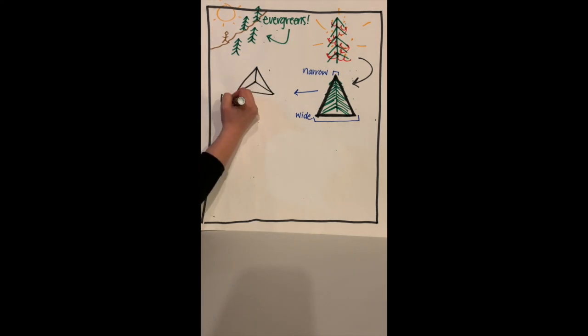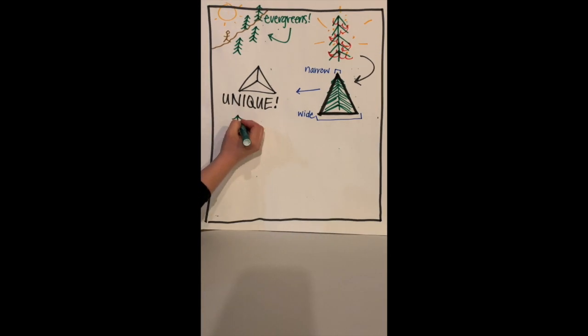Experts believe the unique pyramid shape of certain evergreen trees is an adaptation that has evolved over thousands and thousands of years. Many of these evergreens, collectively known as conifers, live in places with long, snowy winters. In these snowy areas, trees with traditional oval or circular tops would have a hard time surviving.